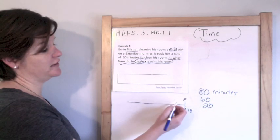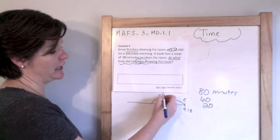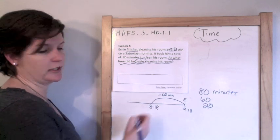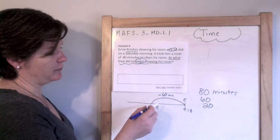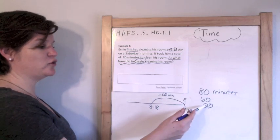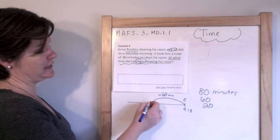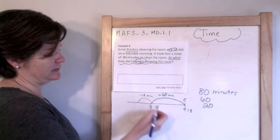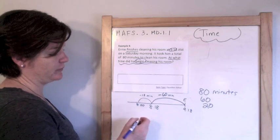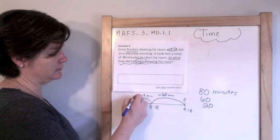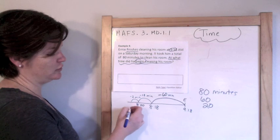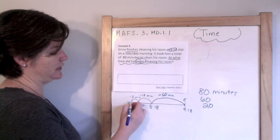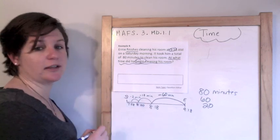So if I go 60 minutes back — subtract 60 minutes — then I would get to 8:18. Now it would be kind of hard to go 20 minutes back directly. So let me first go 18 minutes back, because taking away 18 minutes would mean that we're at 8 o'clock. And then I just need two more minutes to subtract. So if I took away two more minutes, 8 o'clock would mean we're at the 60. Going back would be 59, 58. So 7:58 would have been his start time.